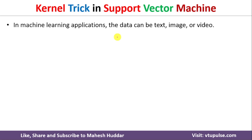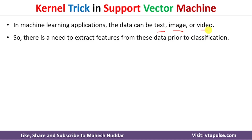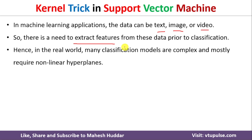When it comes to machine learning applications, data can be in any form — it may be text, an image, or a video. Whenever you want to apply a machine learning or classification algorithm on this data, the very first thing we need to do is extract features from the data points. Once we extract those features, we apply the classification algorithm and then predict the result for new examples.